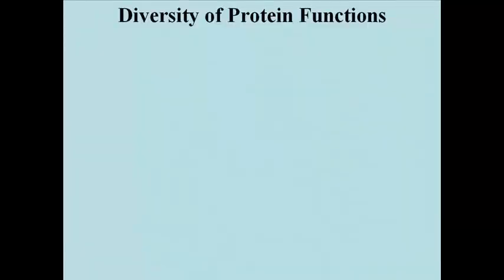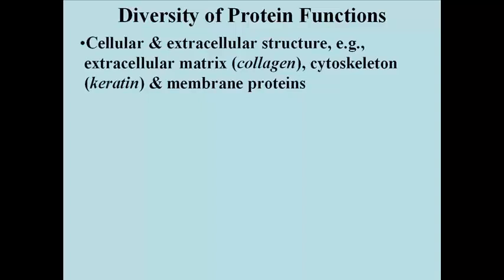Here then is a brief summary of some major functions of proteins, which we'll be looking at in great detail. Many polypeptides and proteins are themselves insoluble, and therefore form parts of cell structures. Perhaps familiar examples include collagen, a protein secreted into the extracellular matrix that helps hold cells and tissues in place in a multi-celled organism. Another is keratin, the extracellular protein of hair, fingernails, and feathers, and can also be found inside cells as part of the cytoskeleton.